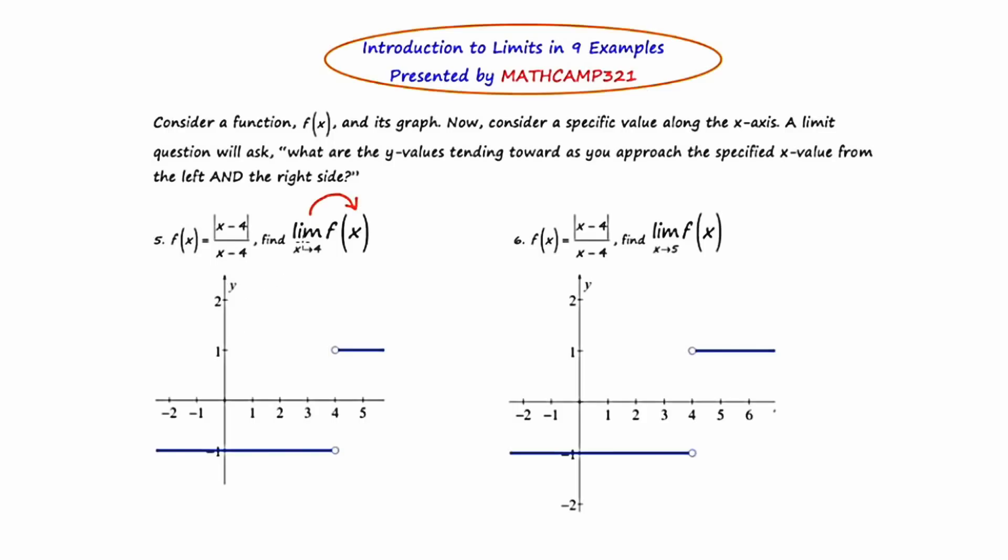Using a similar technique from prior problems, I'm going to identify where along the x-axis I need to look at. In this case, it's four. And I'm going to project towards the curve. The problem is the curve is happening in two different spots on the graph. There's a portion that's happening up here, but there's another portion that's happening down here.